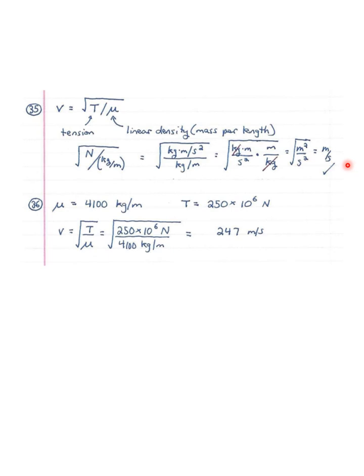Question number 36: the main cables supporting this bridge have a linear mass density of 4,100 kilograms per meter and are under tension of 250 mega newtons. At what speed does a transverse wave travel on these cables? Using the formula from problem 35, speed is the square root of tension over mu. Tension is 250 times 10 to the 6 newtons divided by 4,100 kilograms per meter, and we end up with 247 meters per second.